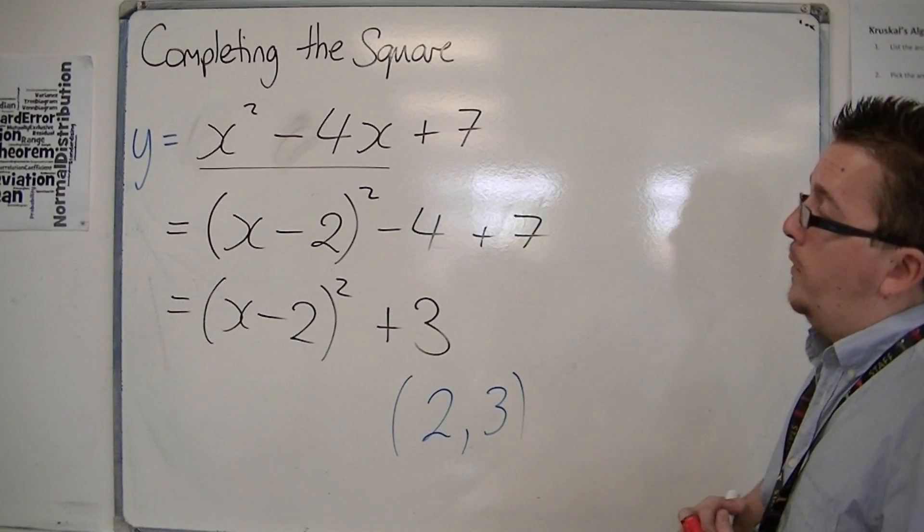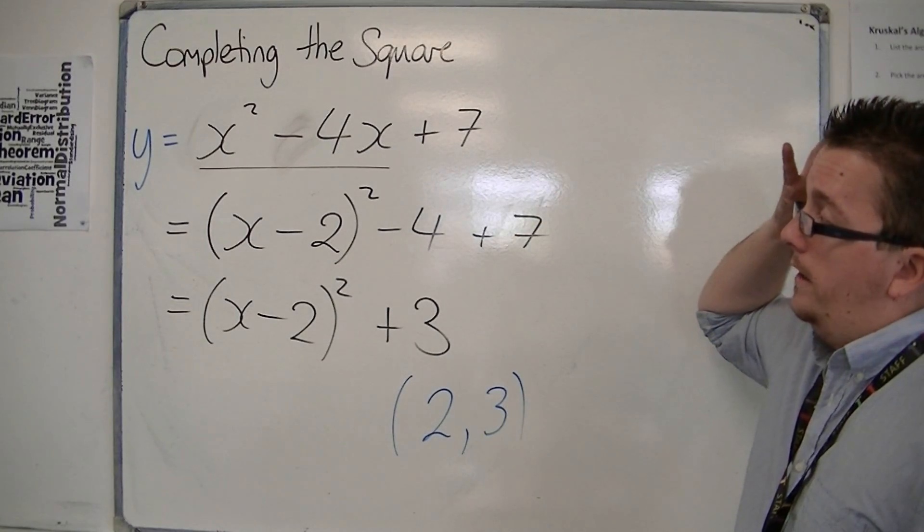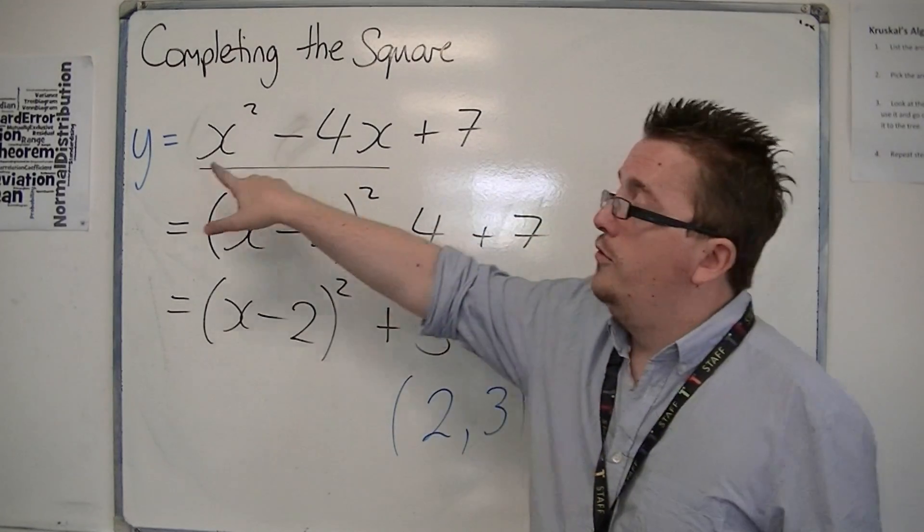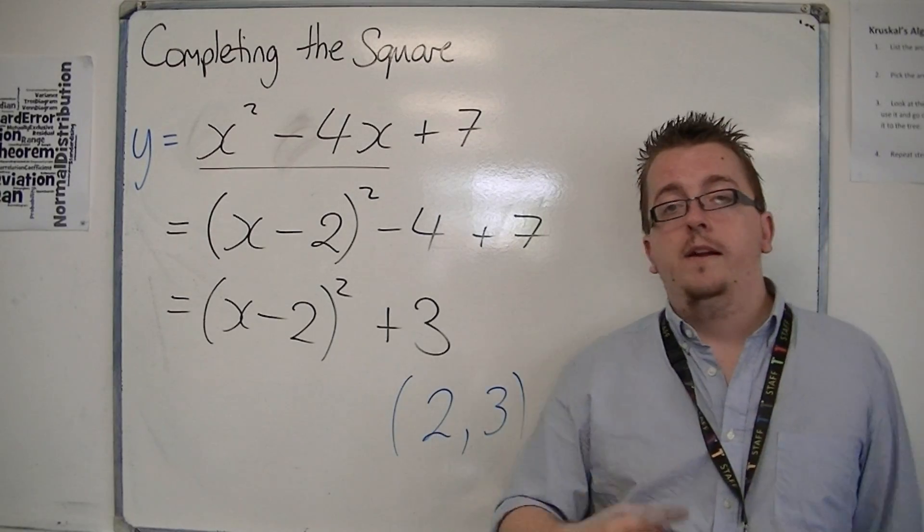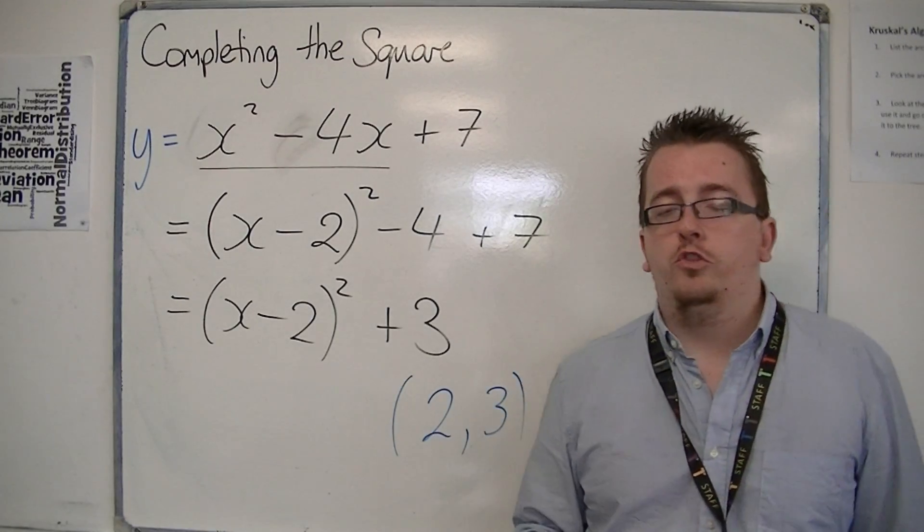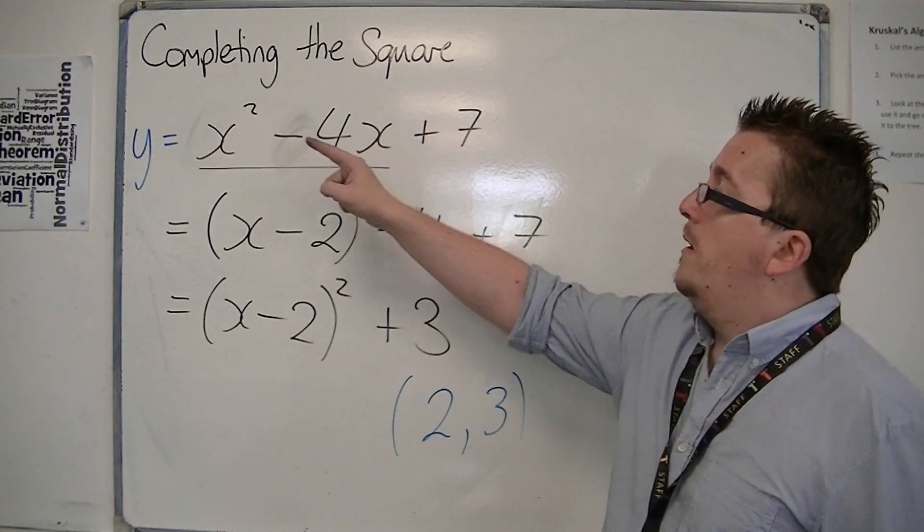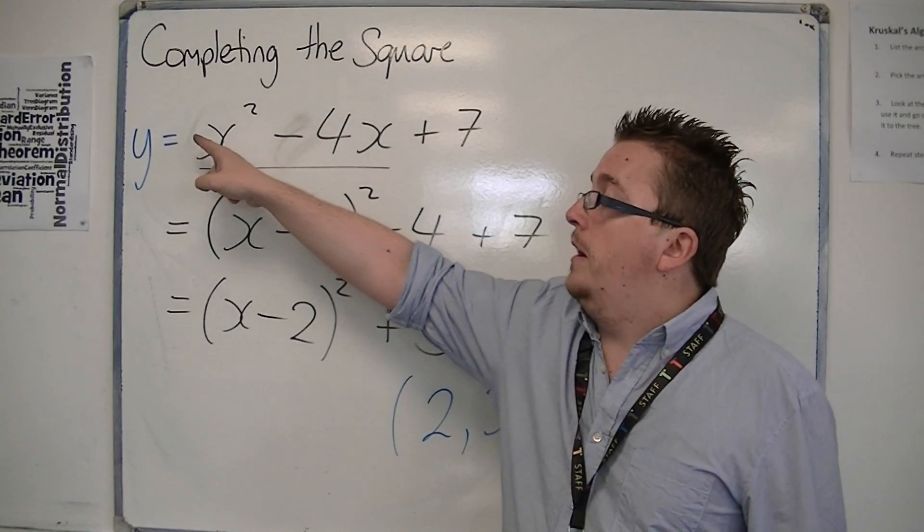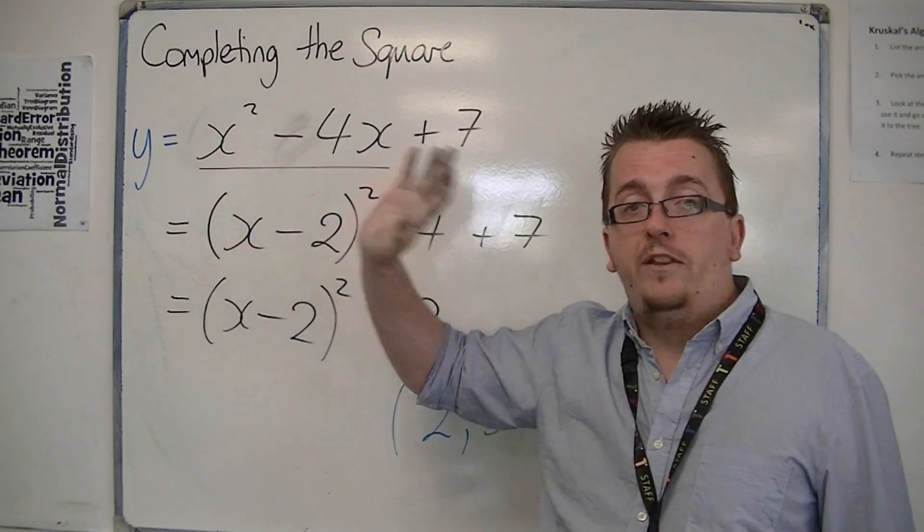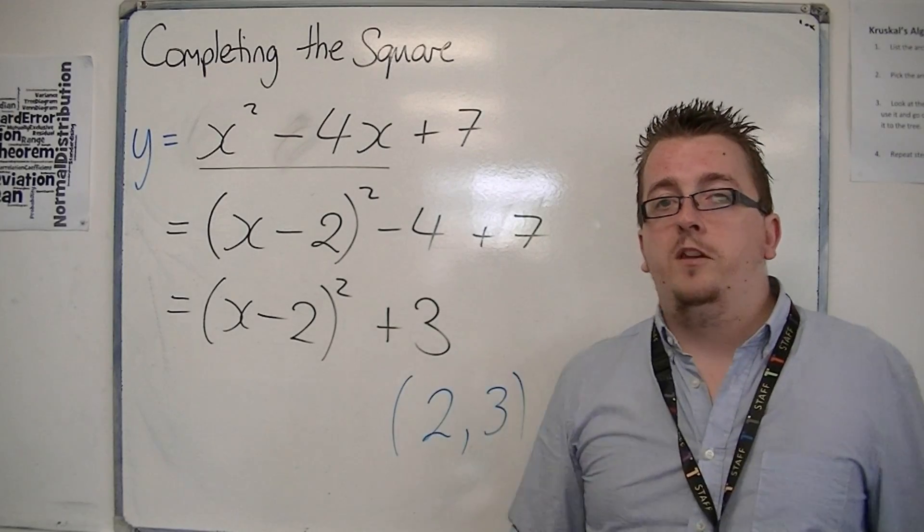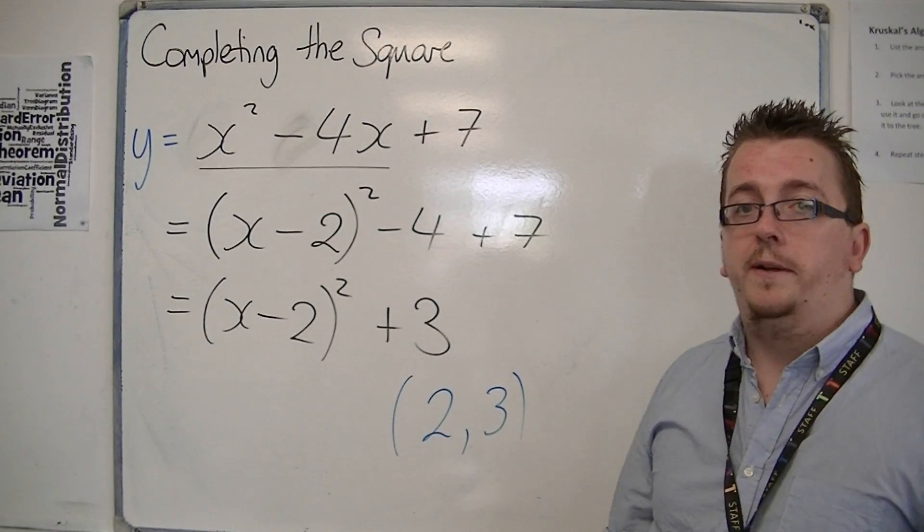So that is completing the square where the number in front of the x² is just 1. In the next video, we'll look at a slightly more challenging problem where the number in front of the x² term isn't 1, and we need to go through a little bit more of a long-winded process.